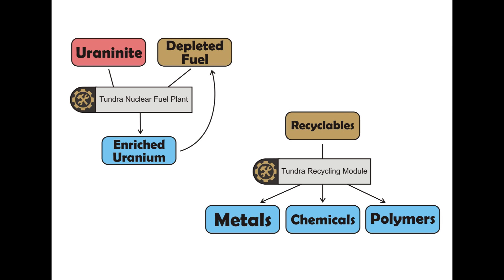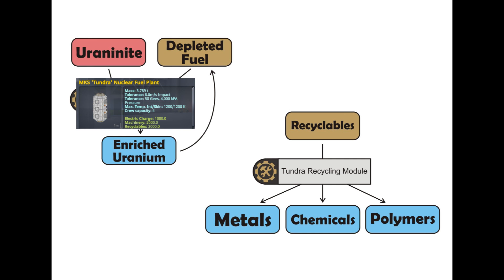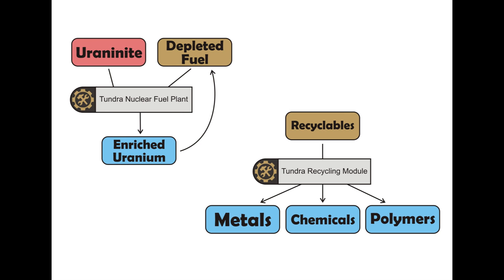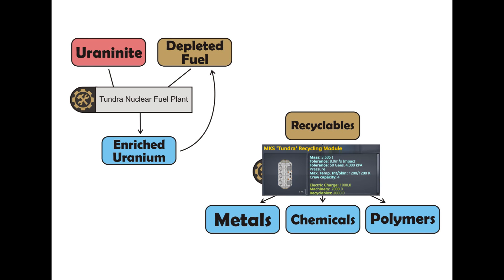MKS also has two extra side chains that are nevertheless quite useful. One is dedicated to nuclear fuel production, which is produced from uraniumite in the Tundra Nuclear Fuel Plant. This enriched uranium will eventually be used in your nuclear reactors, producing depleted fuel as one of its waste resources. That depleted fuel can be reintroduced into the Tundra Nuclear Fuel Plant to create enriched uranium again — so it can be an almost closed cycle. The other side chain is dedicated to recyclables, which are produced by all MKS plants that use machinery to operate. Those recyclables can then be broken down into metals, chemicals, and polymers in the Tundra Recycling Module, allowing you to recuperate some of the initial resources put into making machinery.